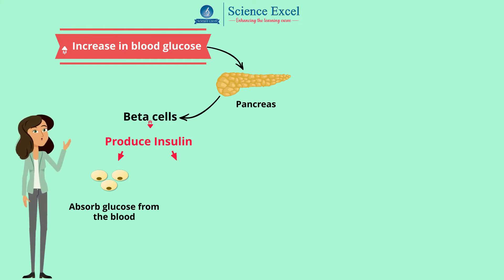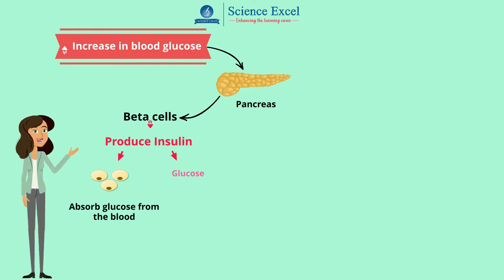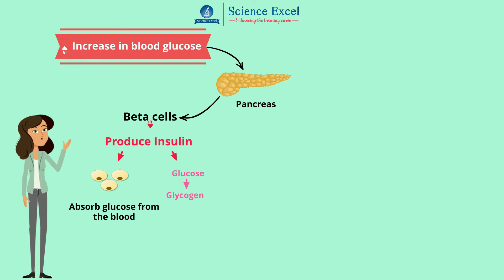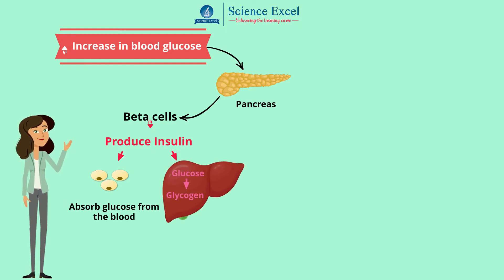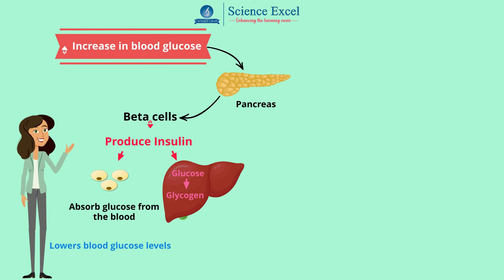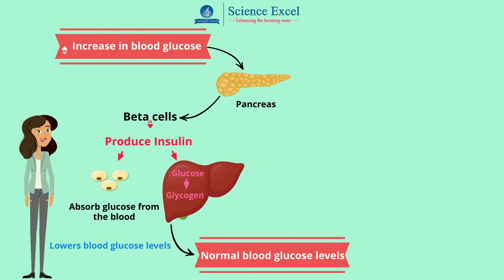Insulin also stimulates the conversion of any excess glucose in the blood into an insoluble substance called glycogen. This glycogen is stored in the liver and muscle cells. Finally, the blood glucose concentration decreases and the insulin secretion is reduced, returning the whole system to homeostasis.